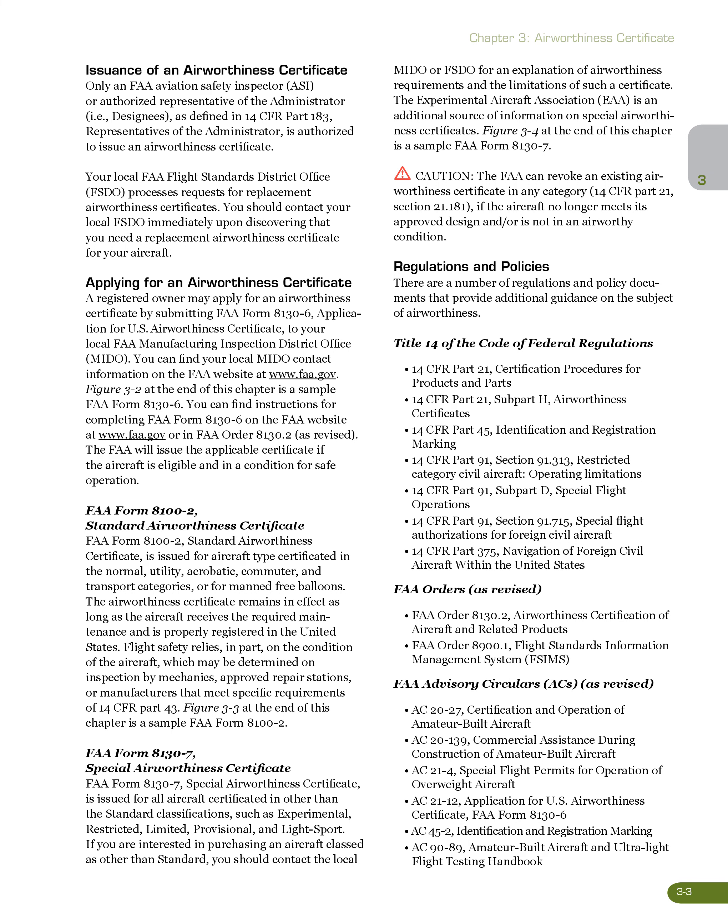FAA Form 8100-2, Standard Airworthiness Certificate, is issued for aircraft type certificated in the normal, utility, acrobatic, commuter, and transport categories, or for manned free balloons. The Airworthiness Certificate remains in effect as long as the aircraft receives the required maintenance and is properly registered in the United States. Flight safety relies, in part, on the condition of the aircraft, which may be determined on inspection by mechanics, approved repair stations, or manufacturers that meet specific requirements of 14 CFR Part 43. Figure 3-3 at the end of this chapter is a sample FAA Form 8100-2.